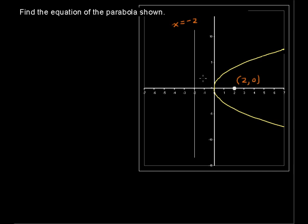When a parabola opens to the right or to the left, you're going to have that general form of y squared equals 4ax.